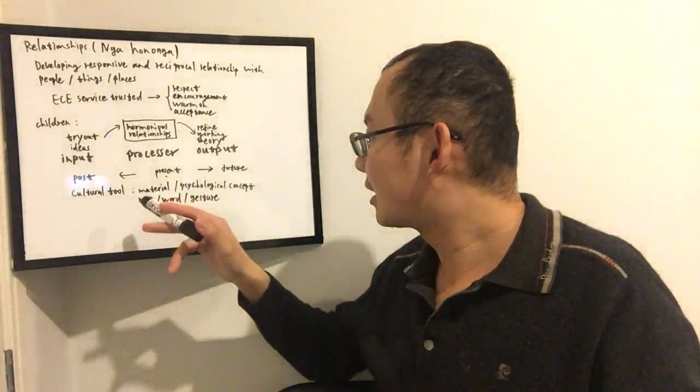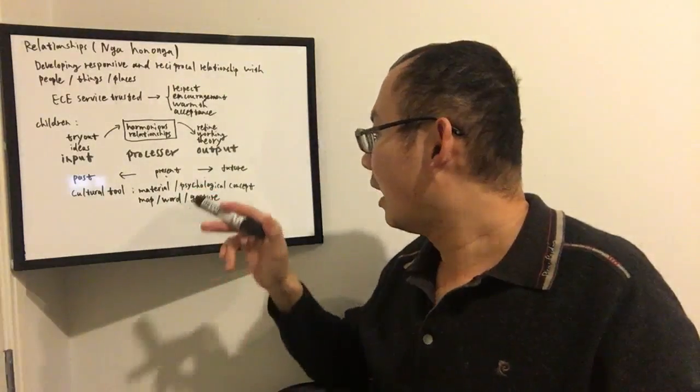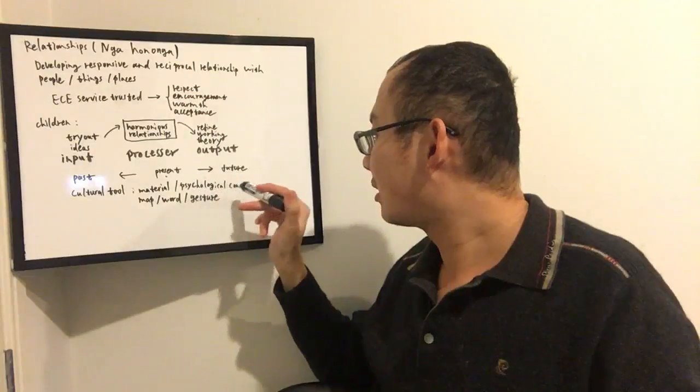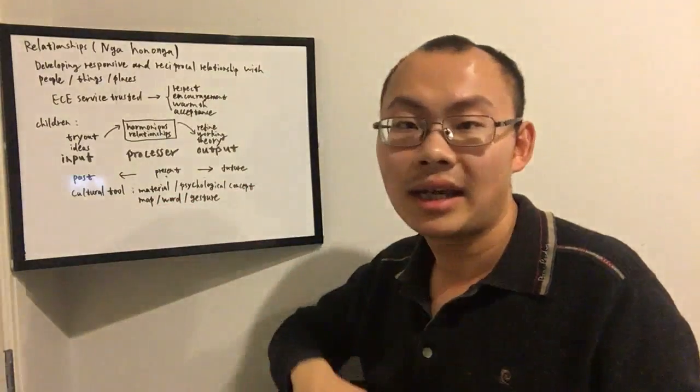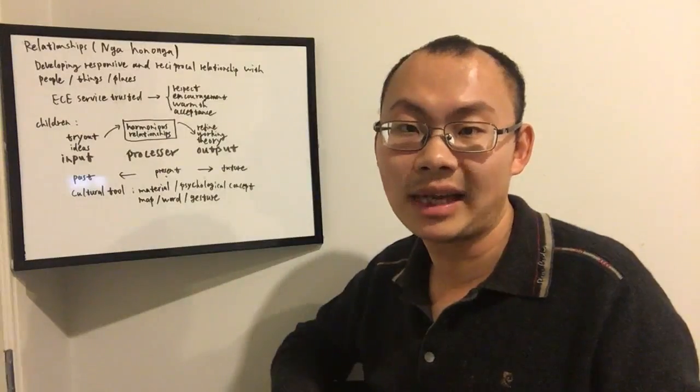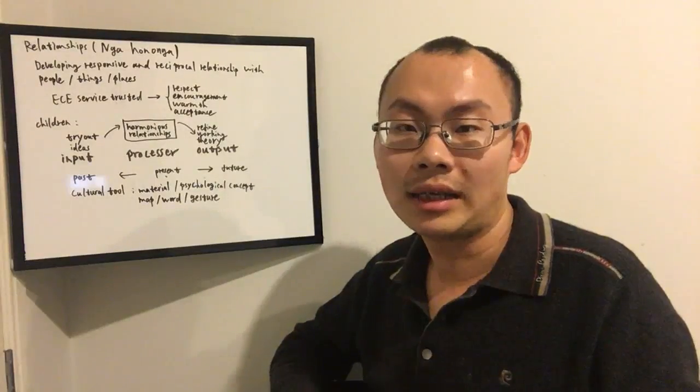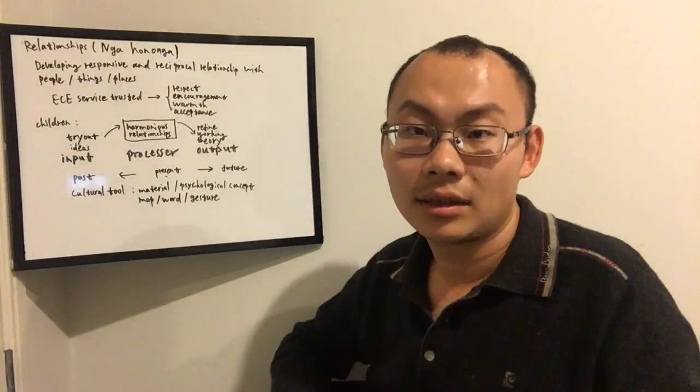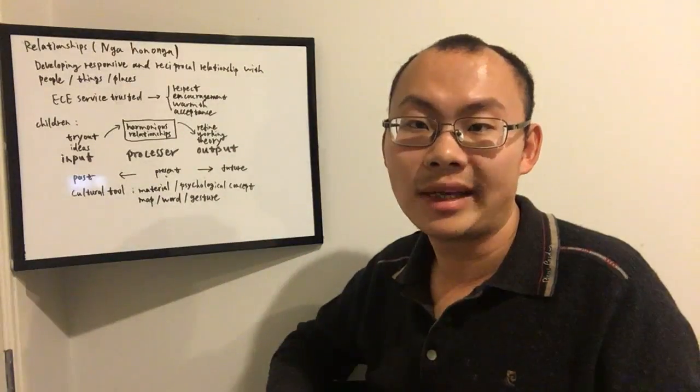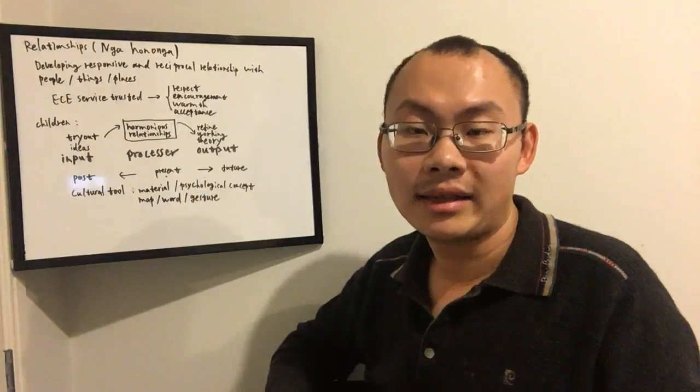Cultural tools can be both material or psychological concepts. For example, a map can record all the places we have gone in our life. And we can make a gesture to show that we respect our ancestors.